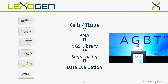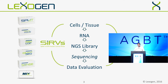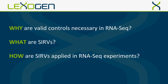The RNA sequencing workflow has many multiple steps to control for all the variabilities. We developed a system, SERVs, which controls for these variabilities. I want to introduce it by answering three questions: Why are valid controls necessary in RNA sequencing experiments? And what are the SERVs and how are they used?